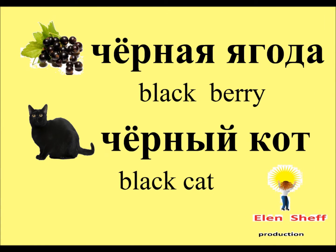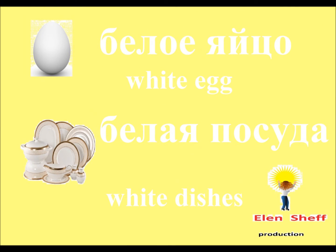Alright friends. Now let's have some practice to memorize colors and remember the words we have learned during the previous lessons. Черная ягода. Черный кот — but everyone likes it. Бе-ло-е яйцо. Белое яйцо. Бе-ла-я по-су-да. Белая посуда.